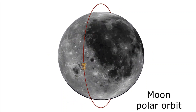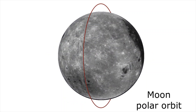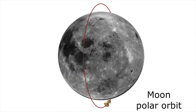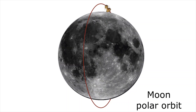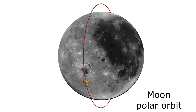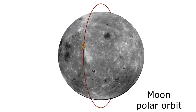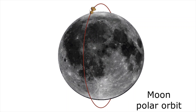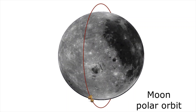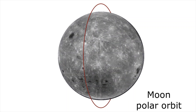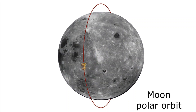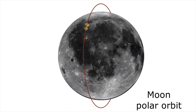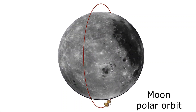A lunar polar orbit is one in which a satellite passes above both poles of the moon on each orbit. That is, the plane of the orbit should have an inclination of 90 degrees with respect to the lunar equatorial plane.